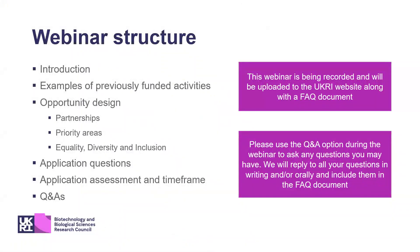I will give a quick introduction to the FTMAs, then give some examples of activities we've funded through BBSRC in previous years. Then we'll present how the opportunity is designed, with three main highlights: partnerships, the priority areas included in the call, and the equality, diversity and inclusion aspects of the call.